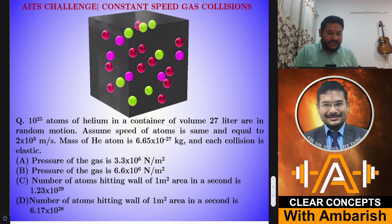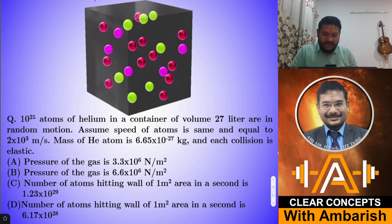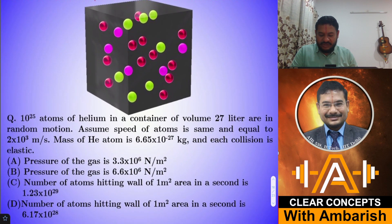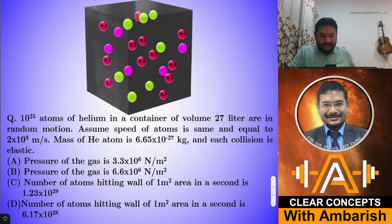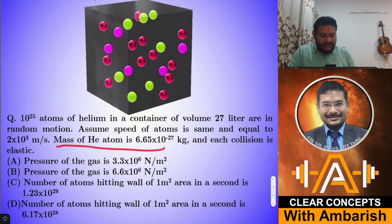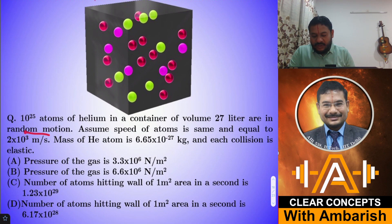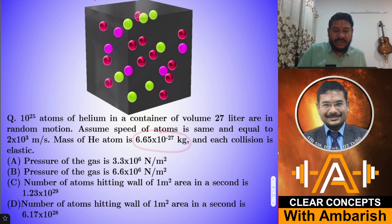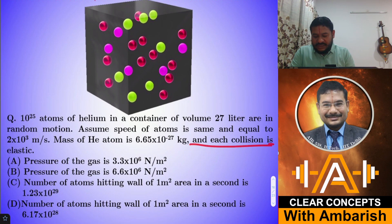So it's a special case of random motion with no statistical distribution like Maxwell-Boltzmann coming into play. The speed is 2×10³ m/s, the mass of the helium atom is 6.65×10⁻²⁷ kg, and each collision is elastic.